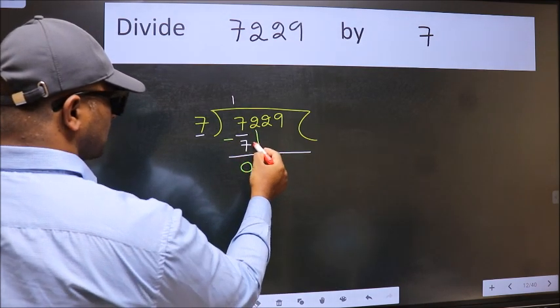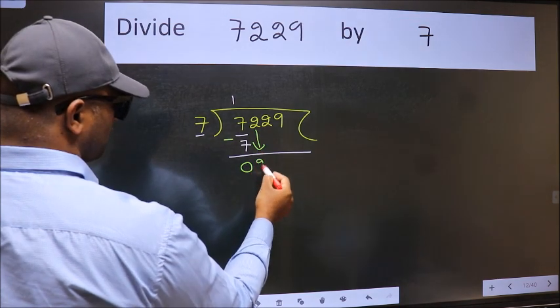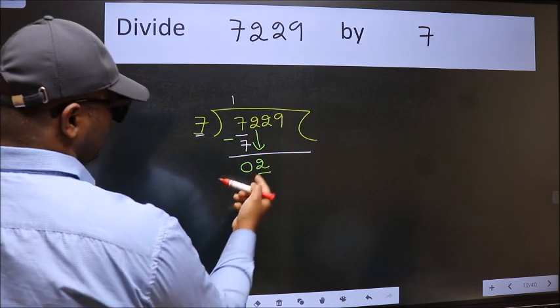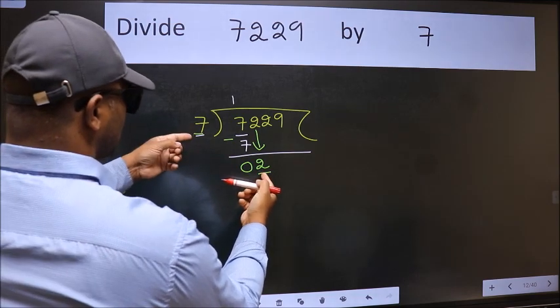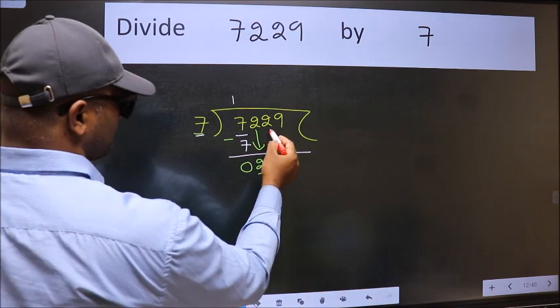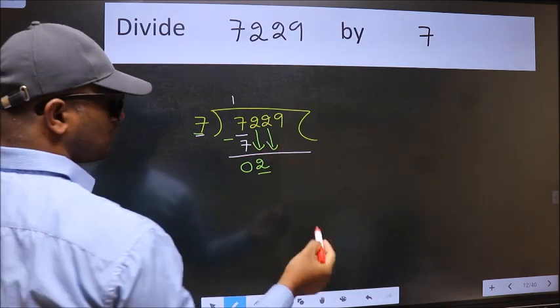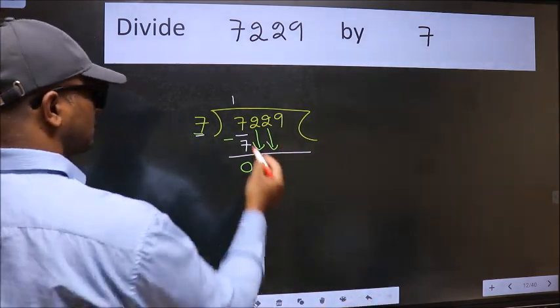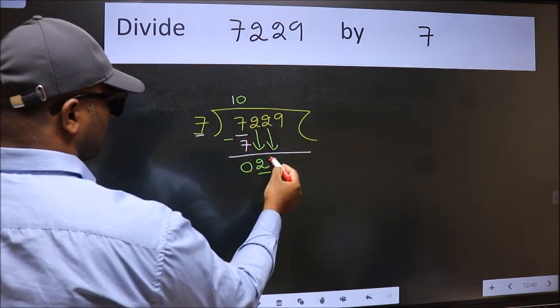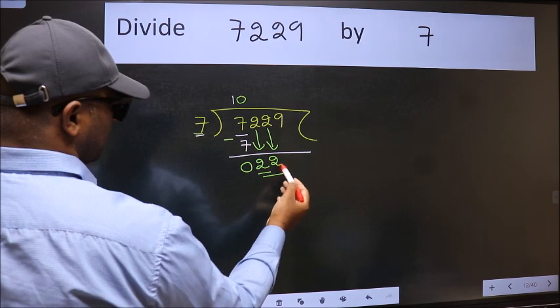After this, bring down the beside number, so 2 down. Now here we have 2 and here 7. 2 is smaller than 7, so we should bring down the second number. The rule to bring down the second number is put 0 here, then only we can bring this number down. So 22.